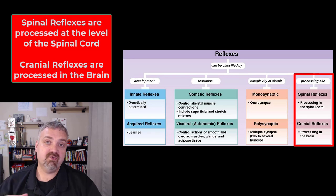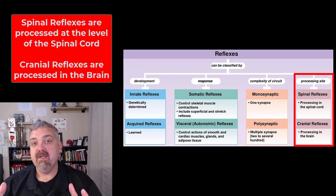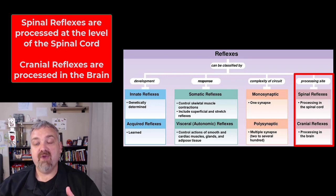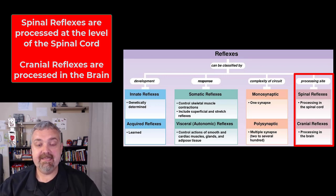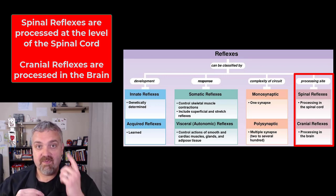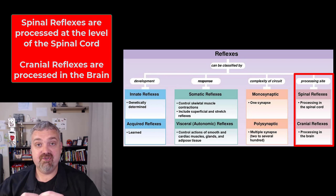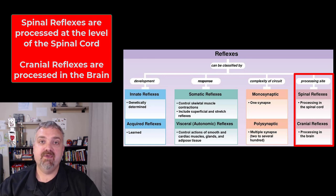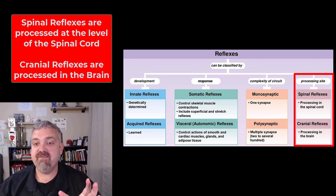Then we have spinal versus cranial reflexes. Spinal reflexes occur at the level of the spinal cord. Cranial reflexes occur at the brain — for example, a response when I touch your eye is a different type of reflex than striking your patellar tendon with a reflex hammer. So those are the eight different classifications of reflexes.